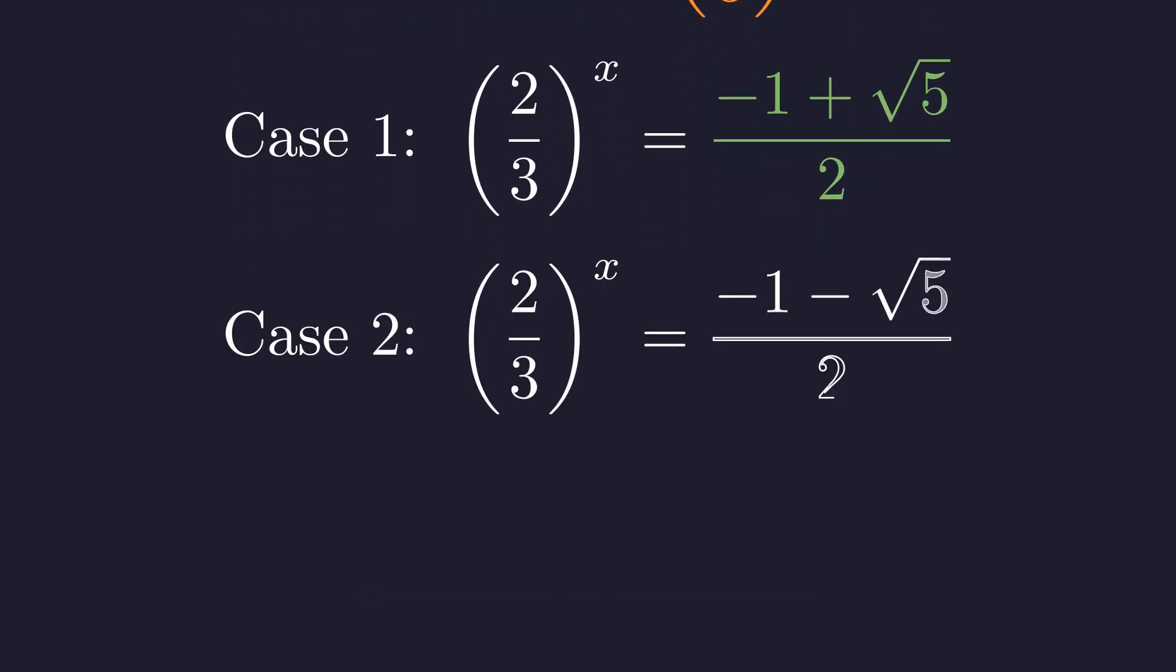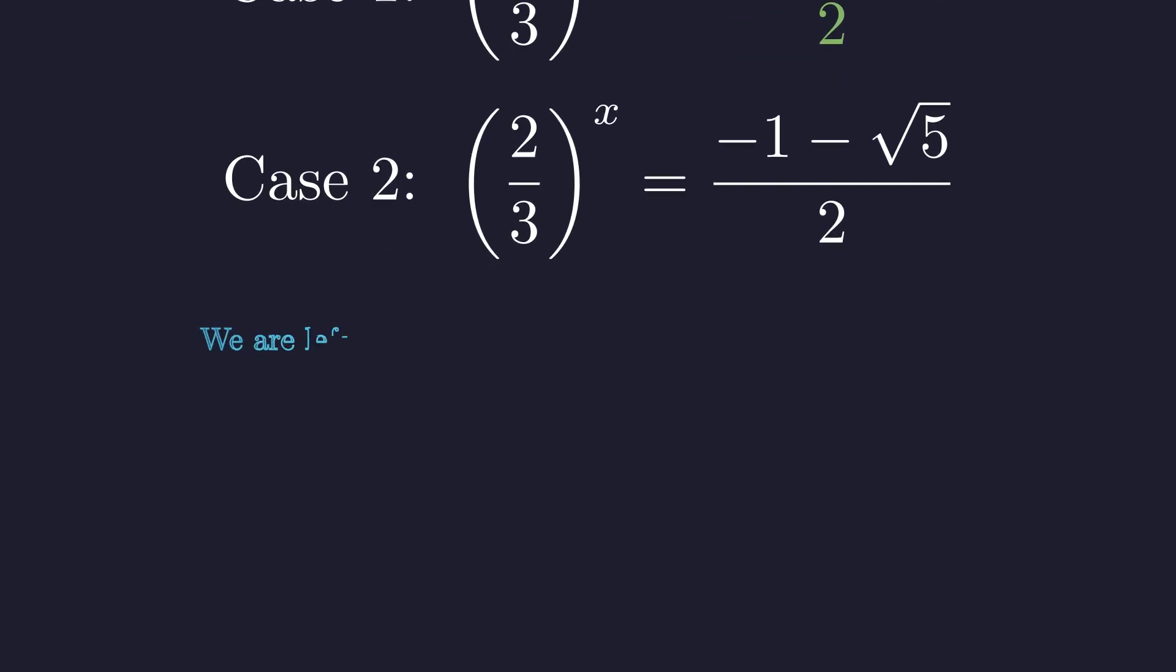Now for our second solution: y equals negative 1 minus the square root of 5, all divided by 2. Let's see if this makes sense in our context. Since our expression 2 over 3 to the power of x must always be positive, the second solution of negative 1.618 must be discarded as it contradicts a basic principle of exponential functions.